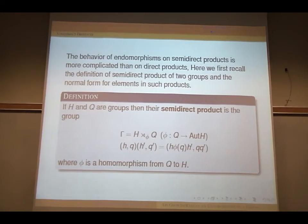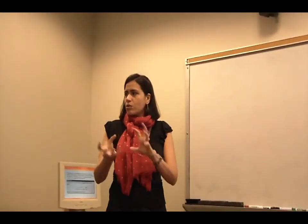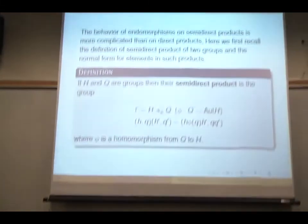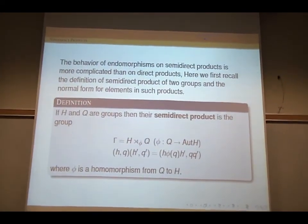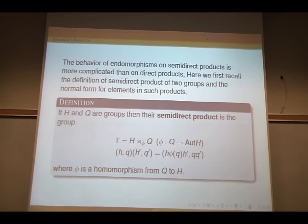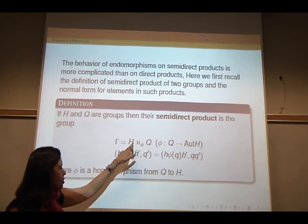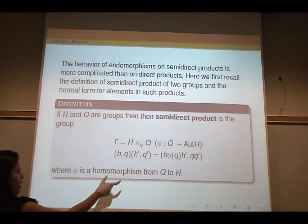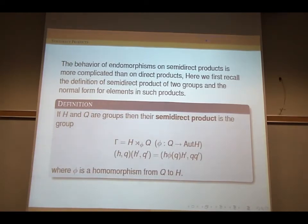The interesting thing happens when you have the semi-direct product — you have some sort of twist. The semi-direct product of H and Q, written as H semi-direct Q, comes equipped with a homomorphism from the second group into the automorphisms of the first one. When you multiply two elements, the second component multiplies as in a direct product, but the first component involves phi(Q) acting on the H part of the second element.